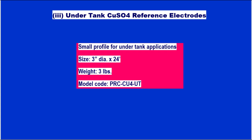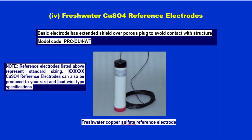The next type is the under-tank copper sulfate reference electrode — small profile for under-tank applications. Size: 3-inch diameter, 24 inches length, weight 3 pounds. Model code: PRCCU4UG. The fresh water copper sulfate reference electrode has an extended shield over the porous plug to avoid contact with the structure. Model code: PRCCU4WT. Reference electrodes listed above represent standard sizing; copper sulfate reference electrodes can also be produced to custom size and lead wire type specifications.